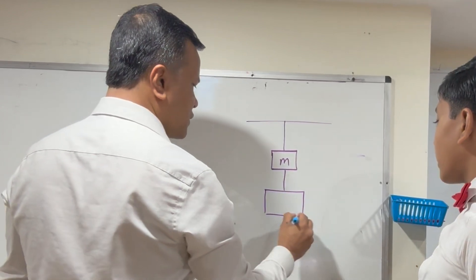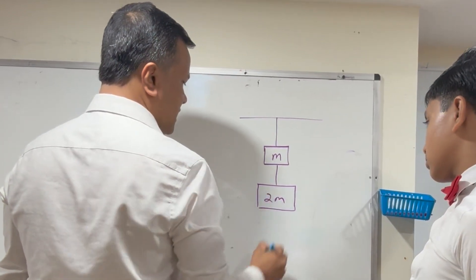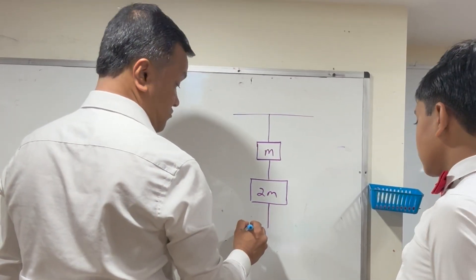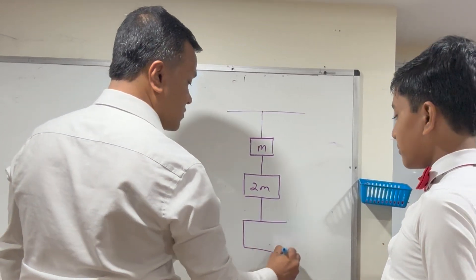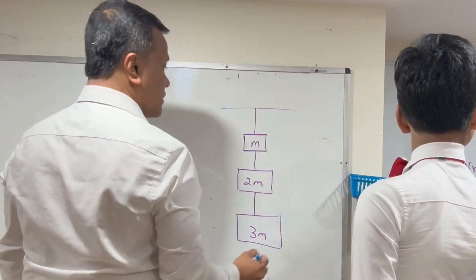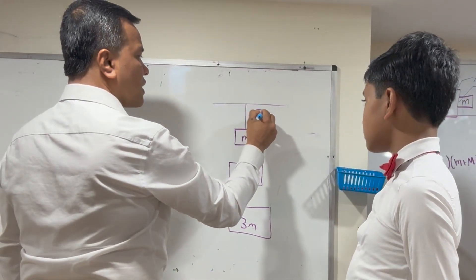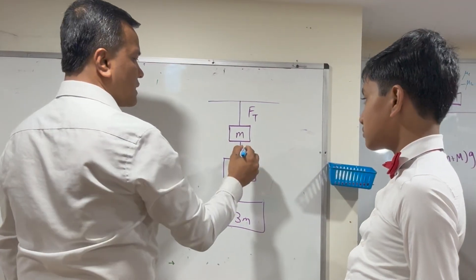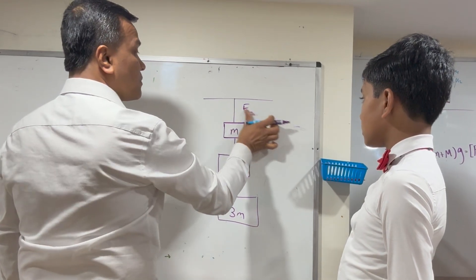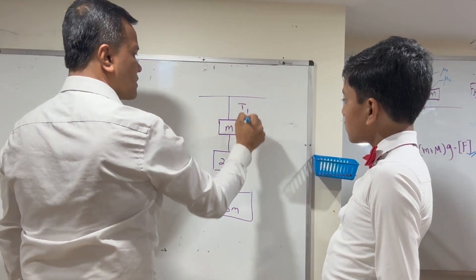Then consider a box with mass 2m and another rope. Then add a box with mass 3m. What do you have? Tension forces. You want to call this one T1.